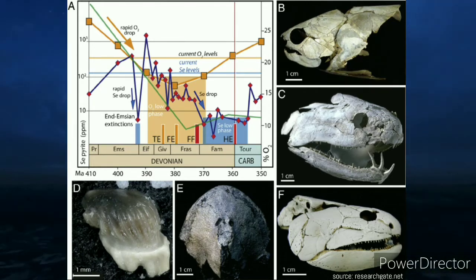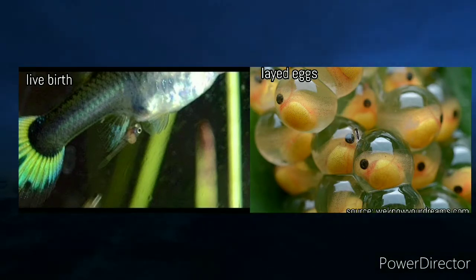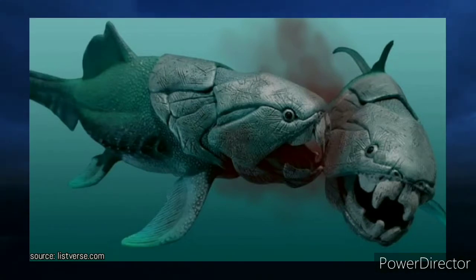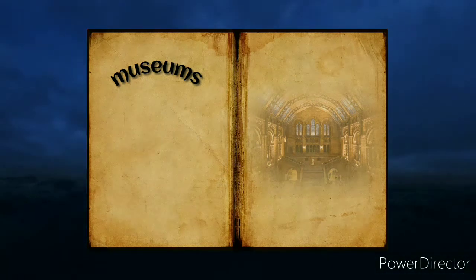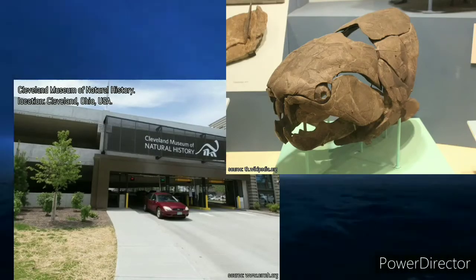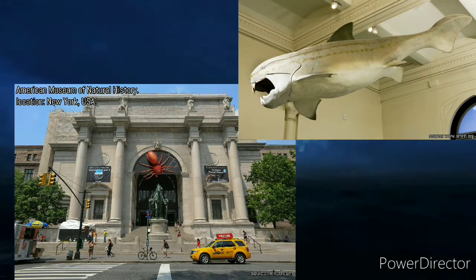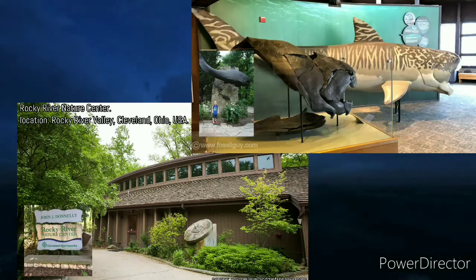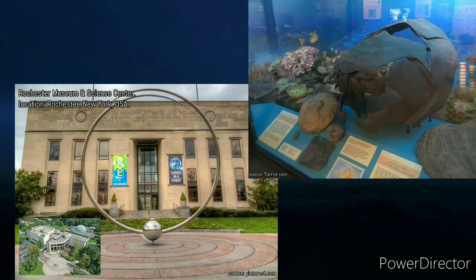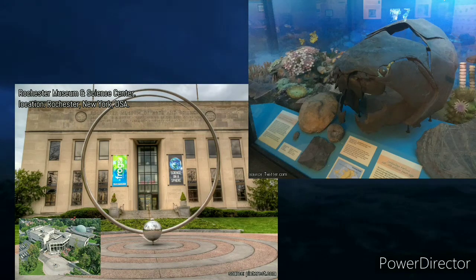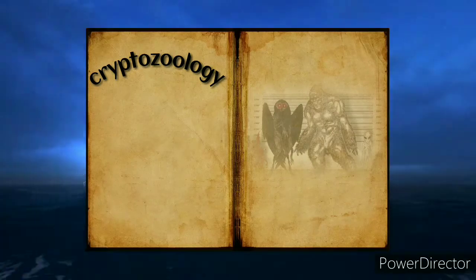What caused the Hangenberg event is still debated. It is also unknown whether Dunkleosteus had live birth or laid eggs, and why individuals attacked each other is not well explained. Museums where you can find fossils and models include: the Cleveland Museum of Natural History in Cleveland, Ohio; the American Museum of Natural History in New York; the Rocky River Nature Center in Cleveland, Ohio; the Rochester Museum and Science Center in Rochester, New York; and the Field Museum of Natural History in Chicago, Illinois.